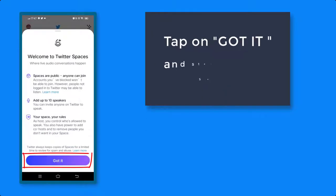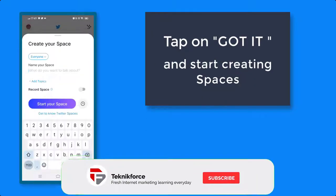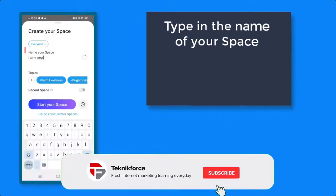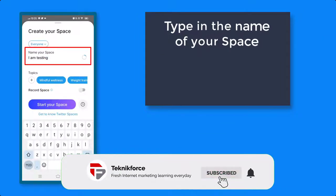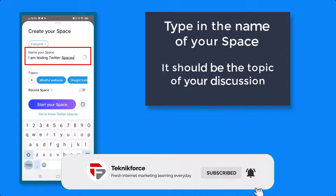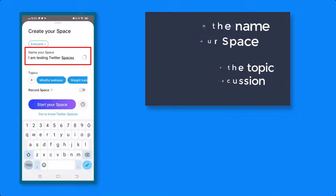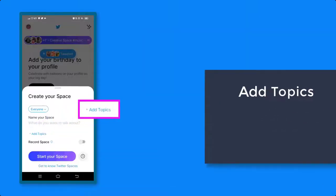You can create your space here. First, type in the name of your space. This should be the topic that you want to talk about. Then add topics.